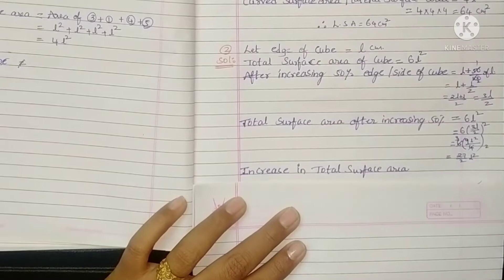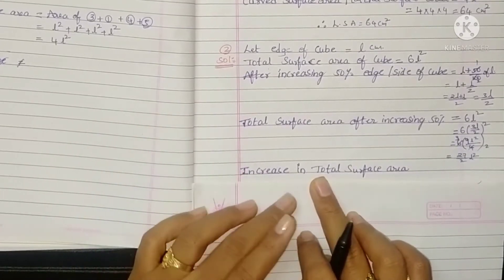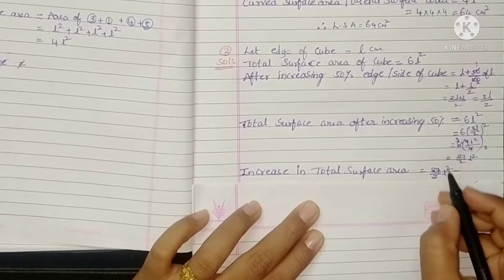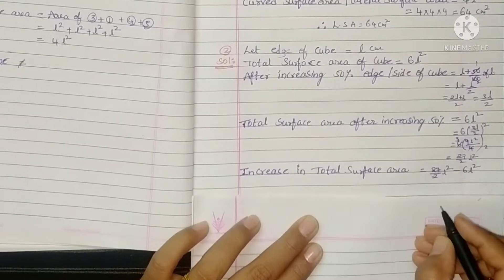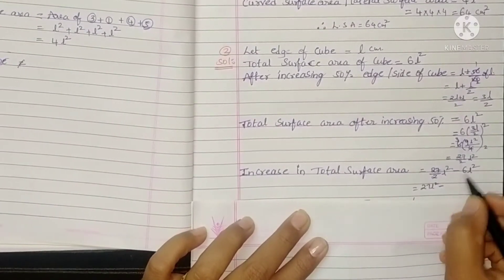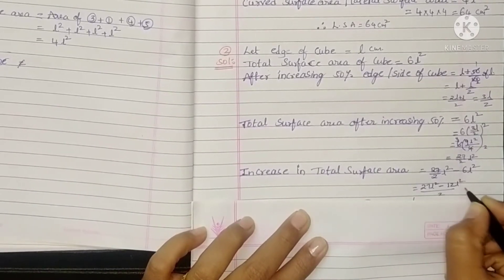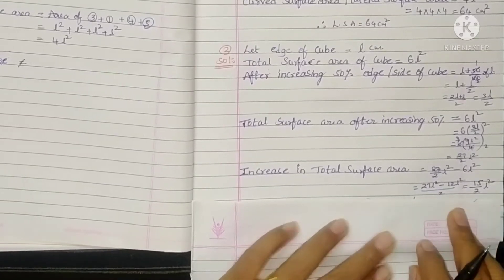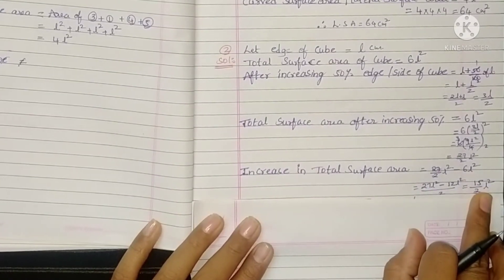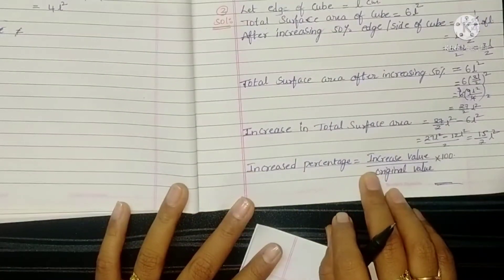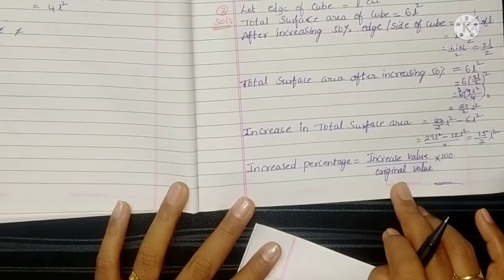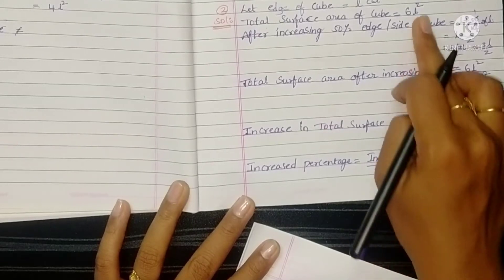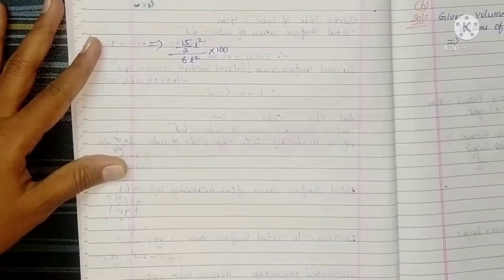Now we want to find the percentage of increase. The increase in total surface area is: new TSA minus original TSA = 27L²/2 minus 6L². That is 27L²/2 minus 12L²/2 = 15L²/2. So the increase in total surface area is 15L²/2. The formula for percentage increase is: (increased value / original value) × 100. That is (15L²/2) / 6L² × 100.